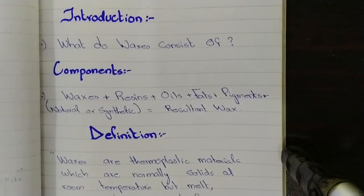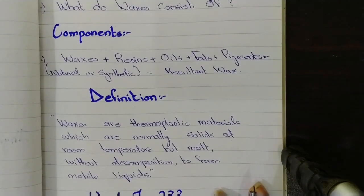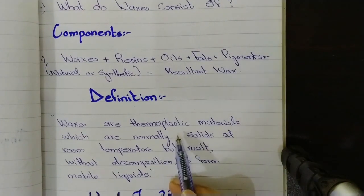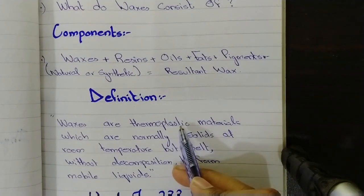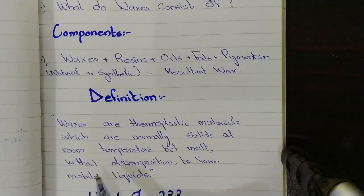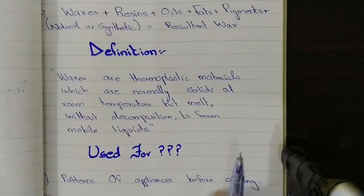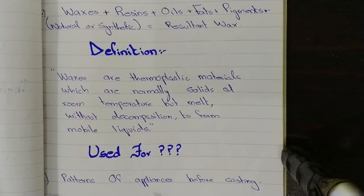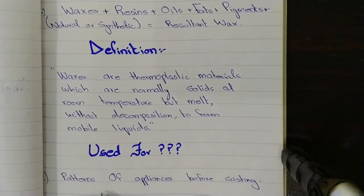Now the definition of dental waxes. Waxes are thermoplastic materials. Basically thermoplastic materials are those materials which are normally solids at room temperature but melt without decomposition. It means they do not lose any of its composition to form mobile liquids. Now what waxes are used for? Waxes are used for making patterns of appliances before casting.